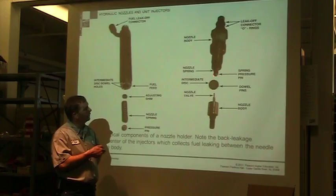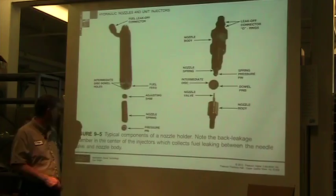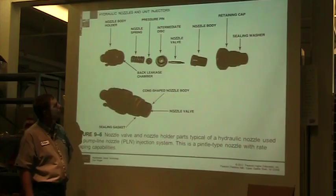The second injector style still has the same kind of nozzle body. We have a spring, a pressure pin which looks a little different but does the same job. The intermediate disc is what's going to be shutting it off, and then we have our nozzle body.